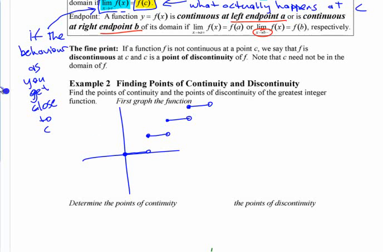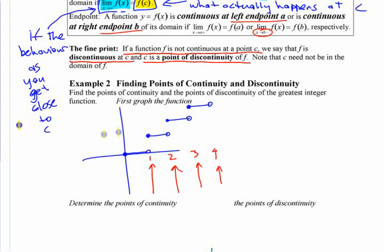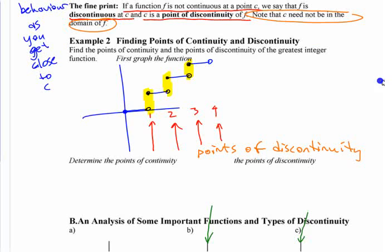The greatest integer function, where is it not continuous? At the integers, right. These are all places where it's discontinuous. If a function is not continuous at point C, we say that it is discontinuous at C. That's pretty obvious, right? And we say that C is a point of discontinuity of F. This thing has a point of discontinuity at every integer value. This is where the trouble is. Note that C need not be in the domain of F.